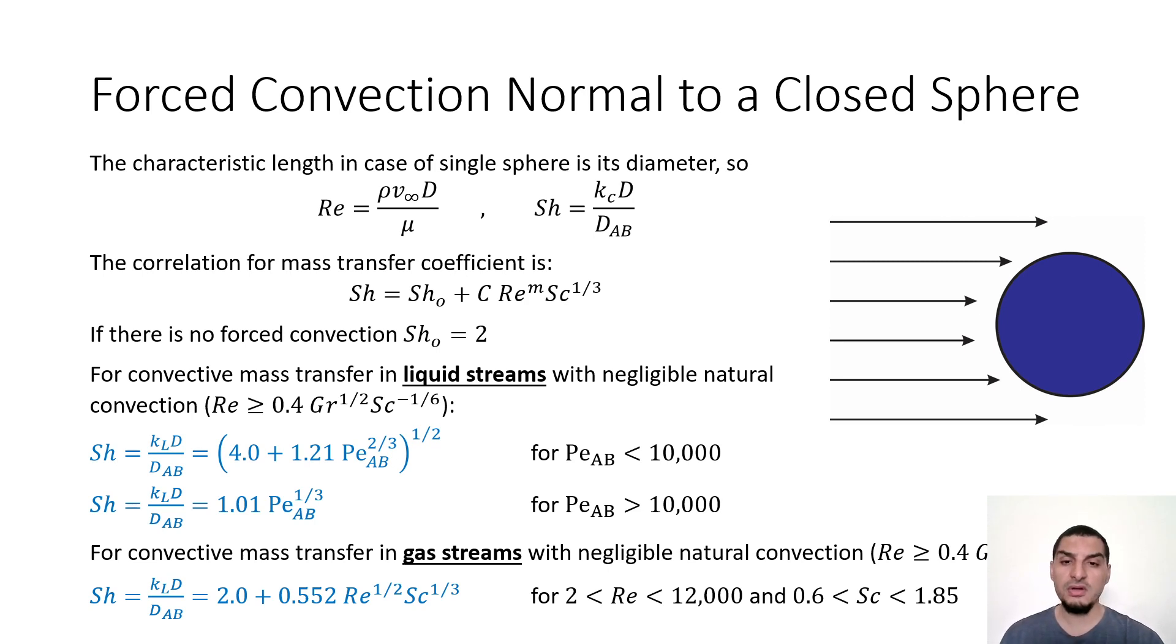For closed sphere you will find that there are different equations. But in the beginning it's important to notice, I think it's known information but just to revise it, that the characteristic length for sphere is the diameter. So if you calculate Reynolds number it's rho V infinity D over mu, Sherwood is K D over D_AB. So this is important to know. You'll find that there are a lot of equations here. Some are used for forced convection, some are used for natural convection, some are used for laminar flow, some are used for turbulent flow.